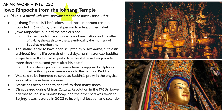Our next piece is the Jowo Rinpoche at the Jokhang Temple. The Jokhang Temple is Tibet's oldest and most important temple, founded by the first person to rule a unified Tibet almost 1,500 years ago. The term Jowo Rinpoche means 'our lord, the precious one,' an honorific often given to describe the Buddha. The statue's hands are in two mudras: one symbolizing meditation and the other calling the earth to witness, symbolizing the moment of Buddha's enlightenment. This represents the Sakyamuni Buddha, the historical Buddha at the age of 12.